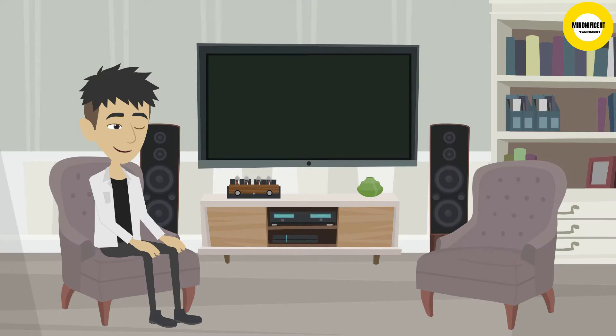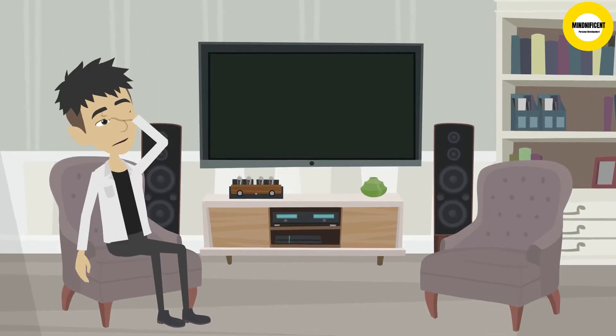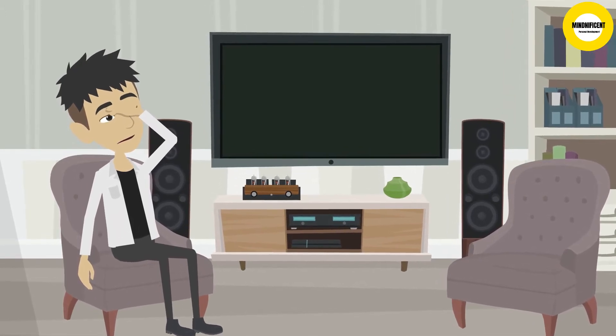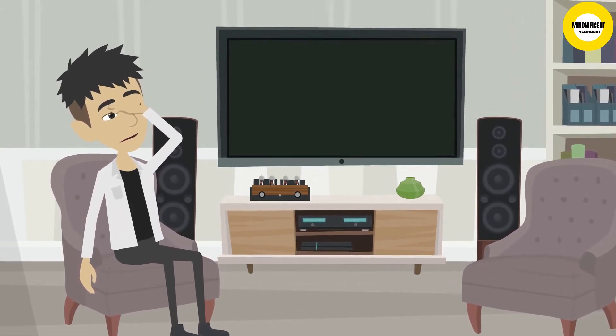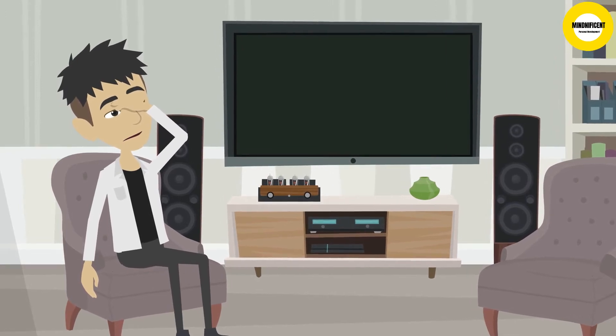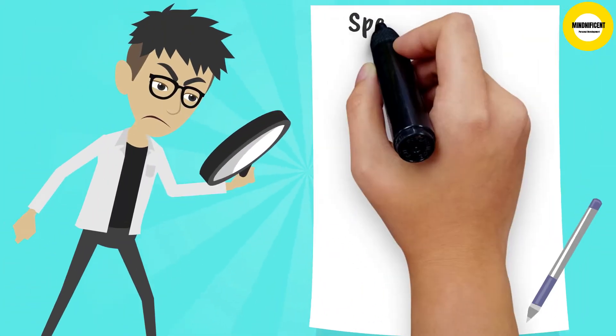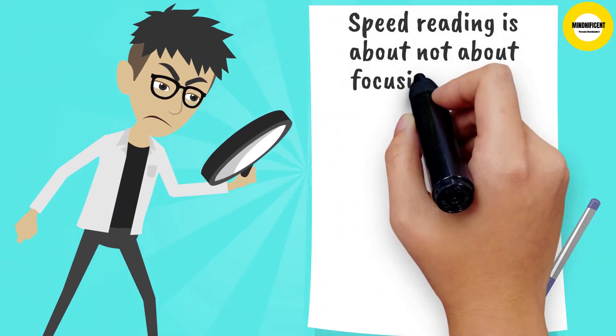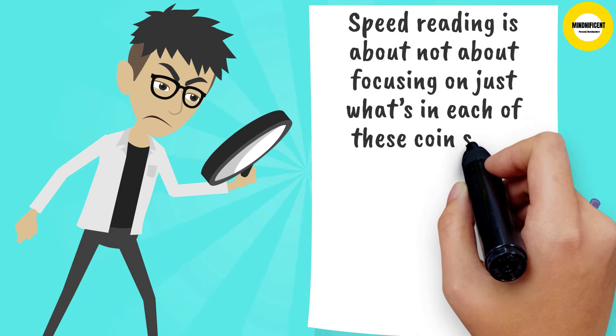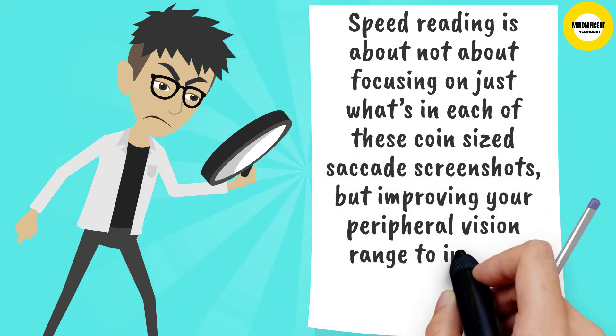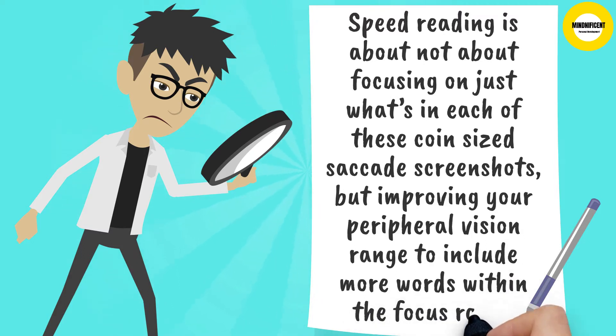As a little exercise, close one of your eyes and place your finger gently on your closed eyelid. Track your vision as it moves along a horizontal line, and you'll actually feel your eye skipping as it makes small distinct movements, stopping to focus on each as it goes from left to right. Speed reading is not about focusing on just what's in each of these coin-sized saccades screenshots, but improving your peripheral vision range to include more words within the focus range.